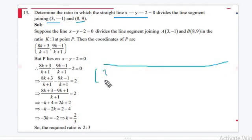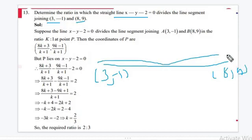So this is (3, -1) and this is (8, 9). Suppose that this line divides the segment at point P in the ratio lambda to 1.